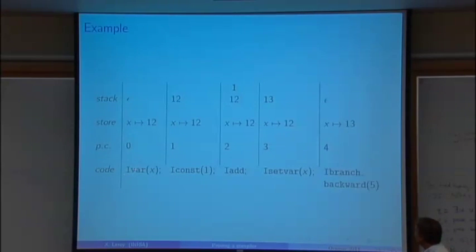So here's a concrete example. That's a piece of code: I var of x, I const of 1, add, set var of x, branch backward by 5. And so if we start with PC 0, empty stack, x equal to 12 in the store, then we execute that instruction, PC gets 1, store is unchanged, stack is now 12.